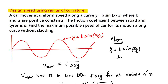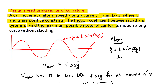The problem is: a car moves at uniform speed along a curve y = b sin(x/α), where b and α are positive constants. The friction coefficient between road and tyre is given and this is equal to μ. We have to find the maximum possible speed of the car for its motion along the curve without any skidding.